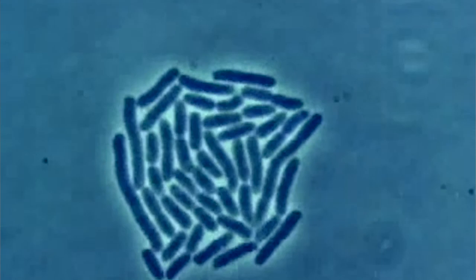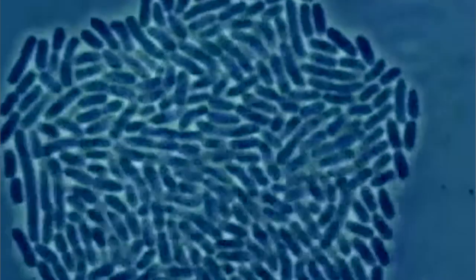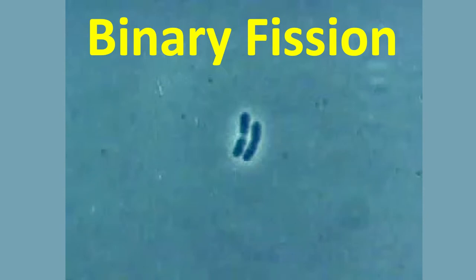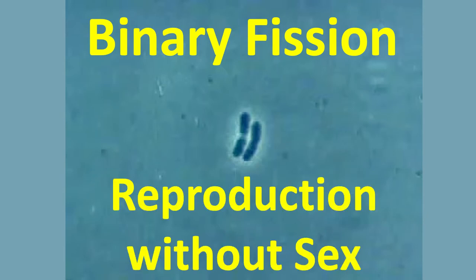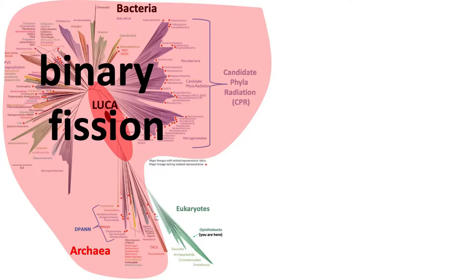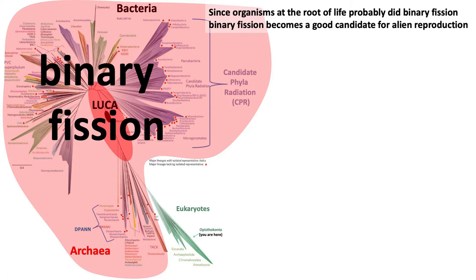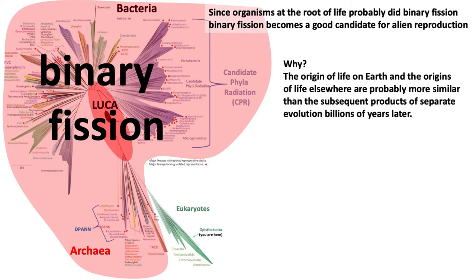Here's a lovely movie of binary fission — each cell gets longer and longer, then divides in half, over and over. There's no sex going on here; they just get longer and divide, so there's reproduction. Binary fission happens almost everywhere in the phylogenetic tree, except in the eukaryotes. Even near LUCA at the root of the tree, binary fission is the mode. Since organisms at the root of life probably did binary fission, it becomes a good candidate for alien reproduction — the origins of life on Earth and elsewhere are probably more similar than the divergent products of billions of years of separate evolution.